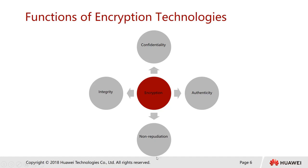The next is non-repudiation. Non-repudiation means if data is sent by a sender, we do not want the sender to deny it by saying this information was not sent by them, or that their account was hacked or spoofed. This is called non-repudiation — the encryption technology can verify the sender's identity.